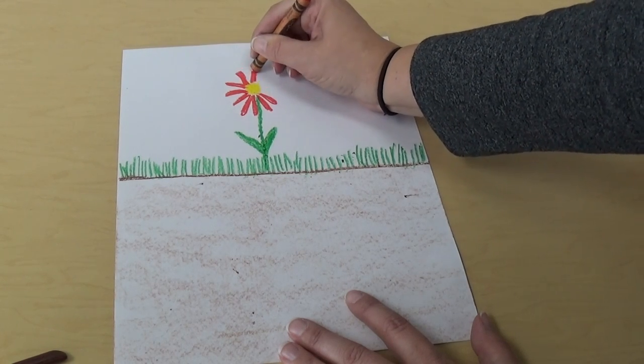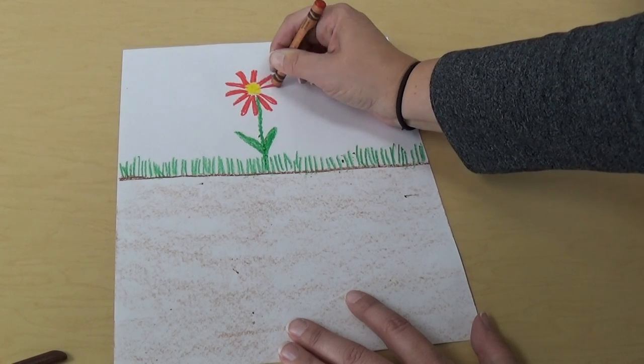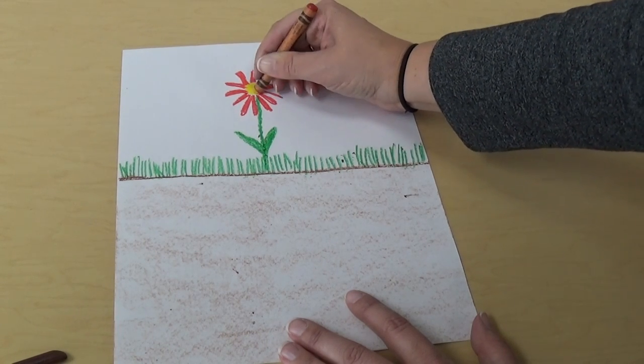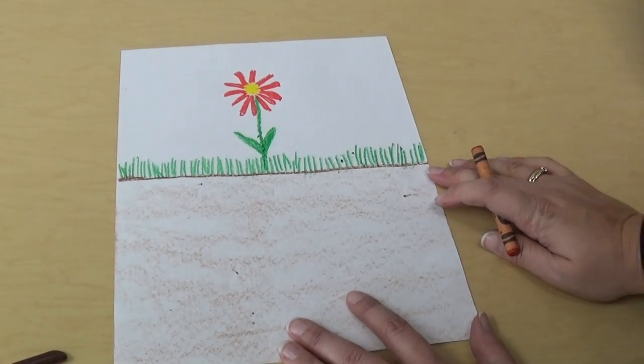And you can choose. If you want a different kind of flower, you can make your flower different. Or you can look at the one in class and make it look like the one we have in class. Just take your time and draw those petals on there.